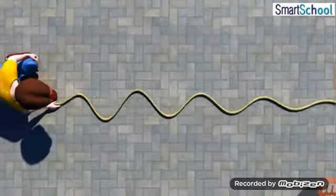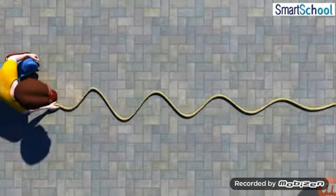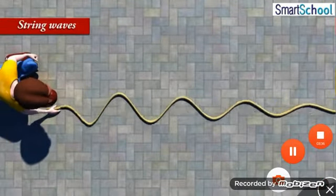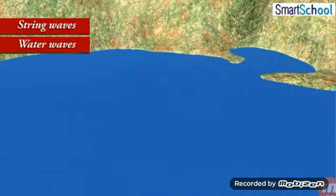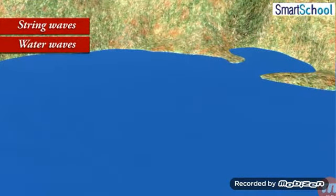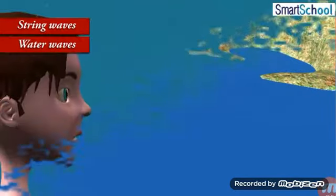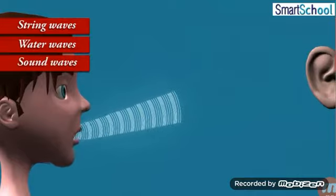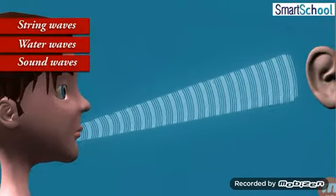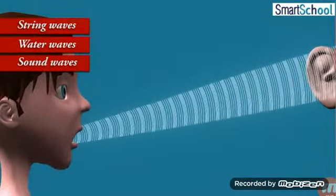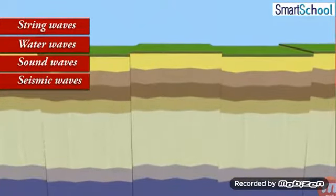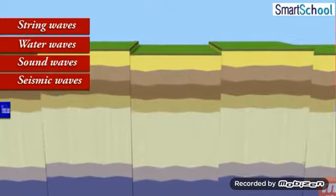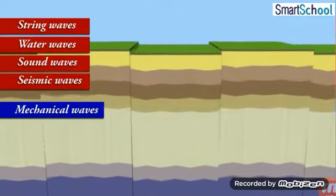The most familiar type of waves, such as waves on a string, water waves, sound waves, seismic waves, etc., are the so-called mechanical waves.